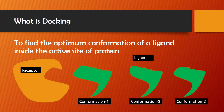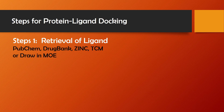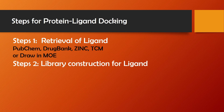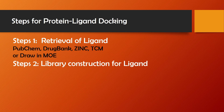Steps for protein-ligand docking: Step 1 is the retrieval of the ligand. We can retrieve our ligand from PubChem database, DrugBank, ZINC, TCM, or we can draw it in MOE or in ChemDraw software, among many other databases. Step 2 is the construction of a ligand library — in MOE we will first construct the molecular database of the ligand, called library construction. Step 3 is the retrieval of the receptor protein.